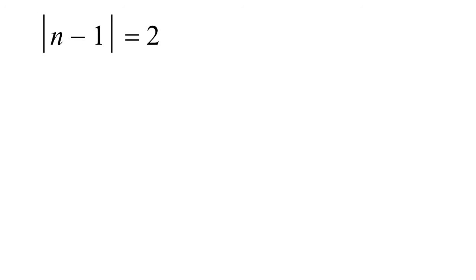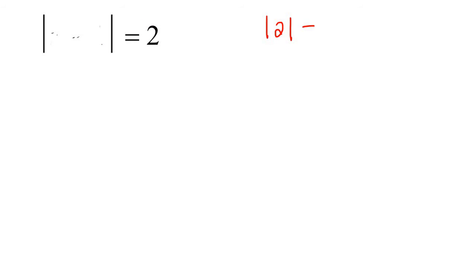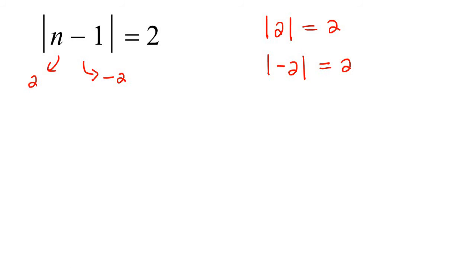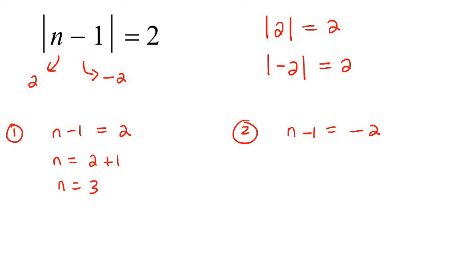Is the absolute value by itself? Yes. Next step: block out whatever's inside. Ask yourself, what number gives you a 2? The absolute value of 2 gives you 2, and the absolute value of minus 2 also gives you 2. So inside the bracket, it could equal 2 or negative 2. Uncovering, we see n minus 1. So n minus 1 equals 2, giving n equals 3, or n minus 1 equals minus 2, giving n equals negative 1.